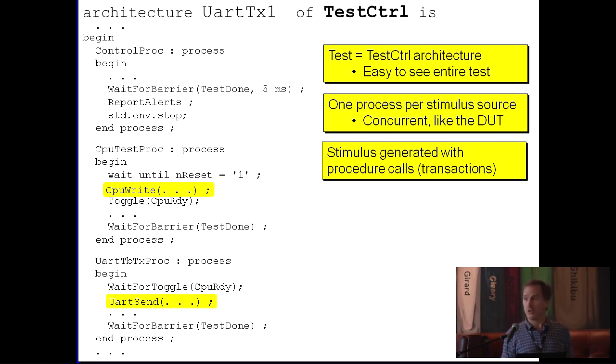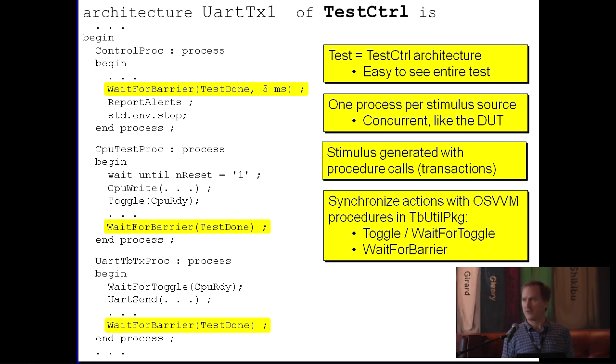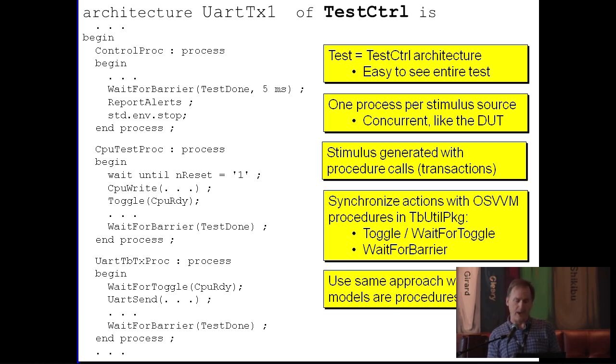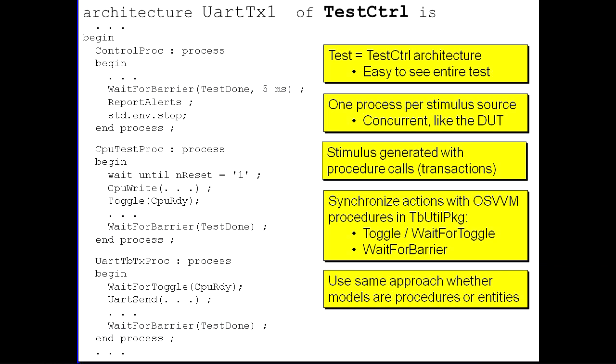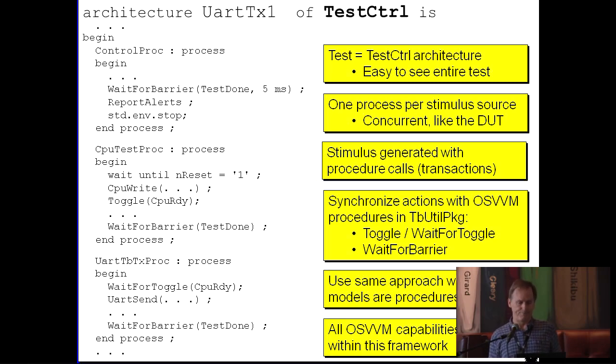Stimulus generated by procedure calls. This is what we call transactions. Transaction is nothing more than what is the basic waveforms your design does. It does reads and writes. Let's implement those as sub-programs that actually talk to the models that hand off and say, do this operation for me, please. We have synchronization primitives. A couple different forms of barrier synchronization, just like in software world that you have barrier synchronizations for concurrency. This is in lieu of fork and join. We have to synchronize our processes somehow. And, indeed, we use the same approach whether we're doing verification components or whether we're implementing the waveforms into procedures themselves. And all OSVVM capabilities work in this framework. Most of them work in a regular VHDL test bench.